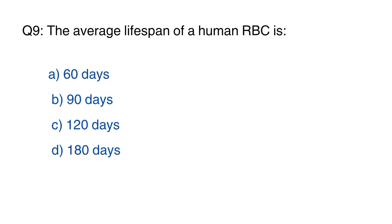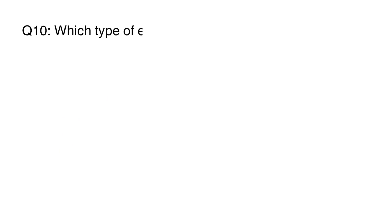Question number 9. The average lifespan of a human RBC is? The right option is C, 120 days.